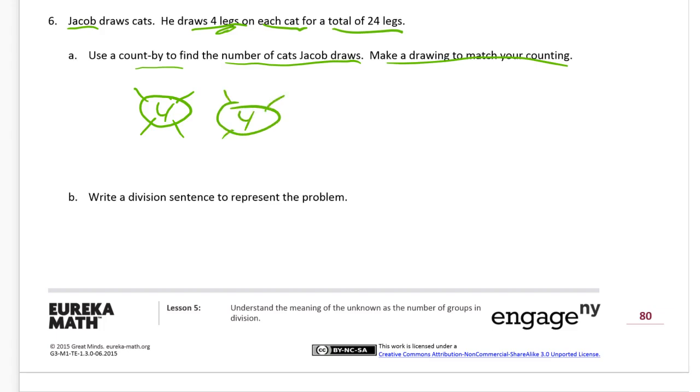There's four. These are all going to have four. So that's four, five, six, seven, eight legs. Nine, ten, eleven, twelve legs. Thirteen, fourteen, fifteen, sixteen legs. Seventeen, eighteen, nineteen, twenty legs. So I'm going to need one more cat. Twenty-one, twenty-two, twenty-three, twenty-four legs. So each one of these, these are all fours, right?